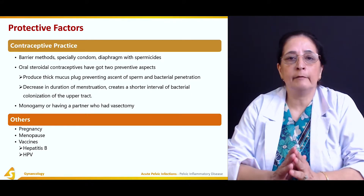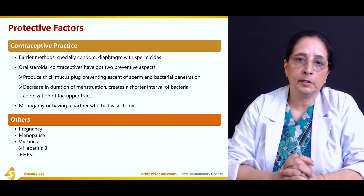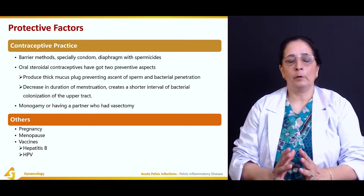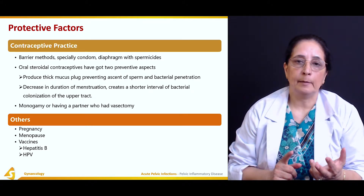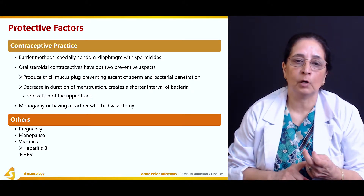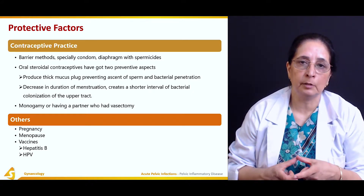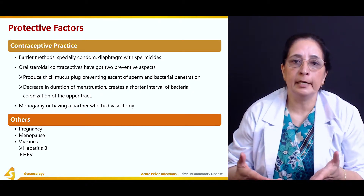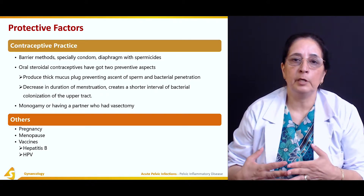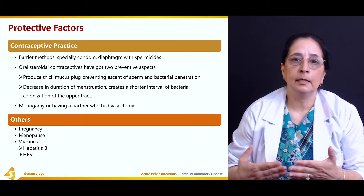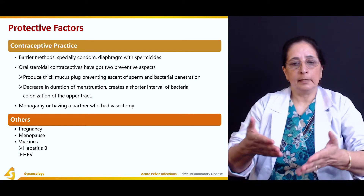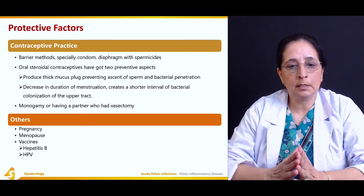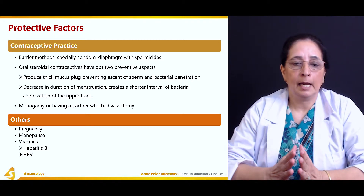Monogamy or having a partner who has had a vasectomy can also protect against pelvic inflammatory disease. Oral contraceptive pills thicken the mucus and protect against microorganism penetration, and they shorten the menstrual cycle, leading to more shedding of the endometrium, which also protects against PID. Other protective factors include pregnancy, menopause, and vaccines against hepatitis B and human papillomavirus.